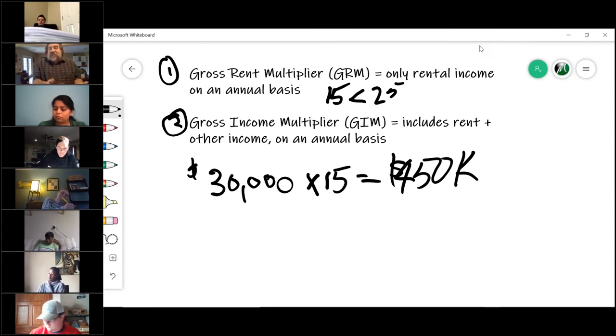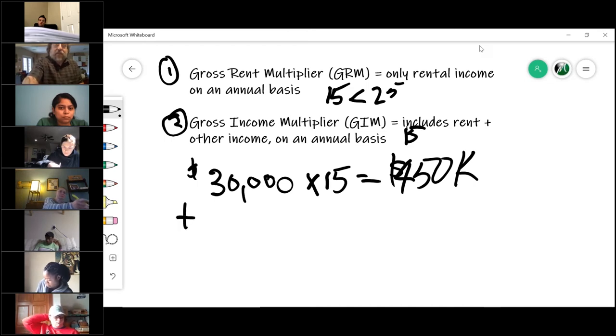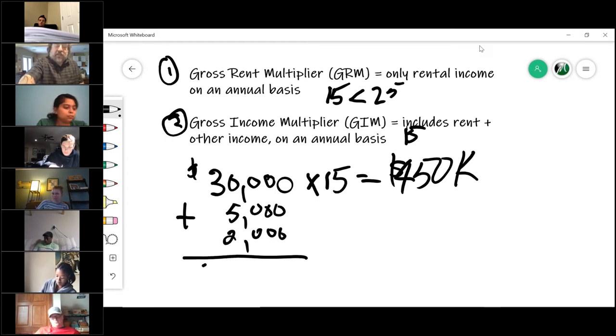On the gross rental multiplier, you only multiply the rental income. On the gross income multiplier, it would take into account other sources of income. Like the laundry machines, the Coke machine, and we rented out the clubhouse and we sold pool passes. So in this example, if we said a gross income multiplier of 15, but now we have to look at all of the income. So 30,000 was the rent, but we made five grand in pool passes and we made two grand in Coke machine. Our total income is 37,000.